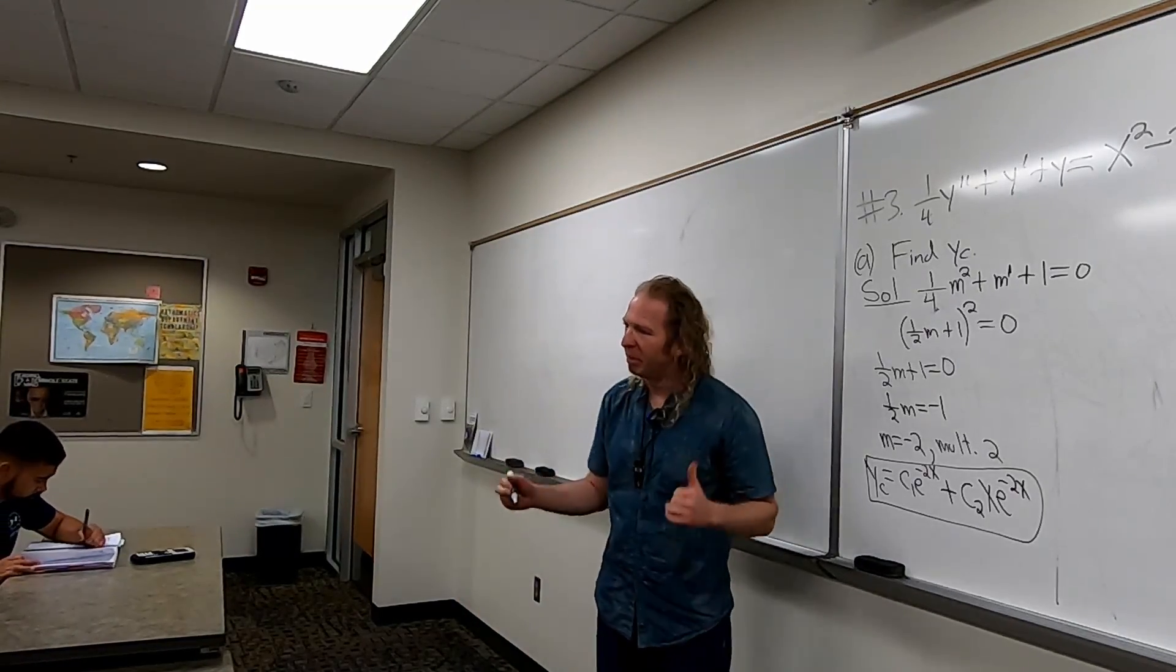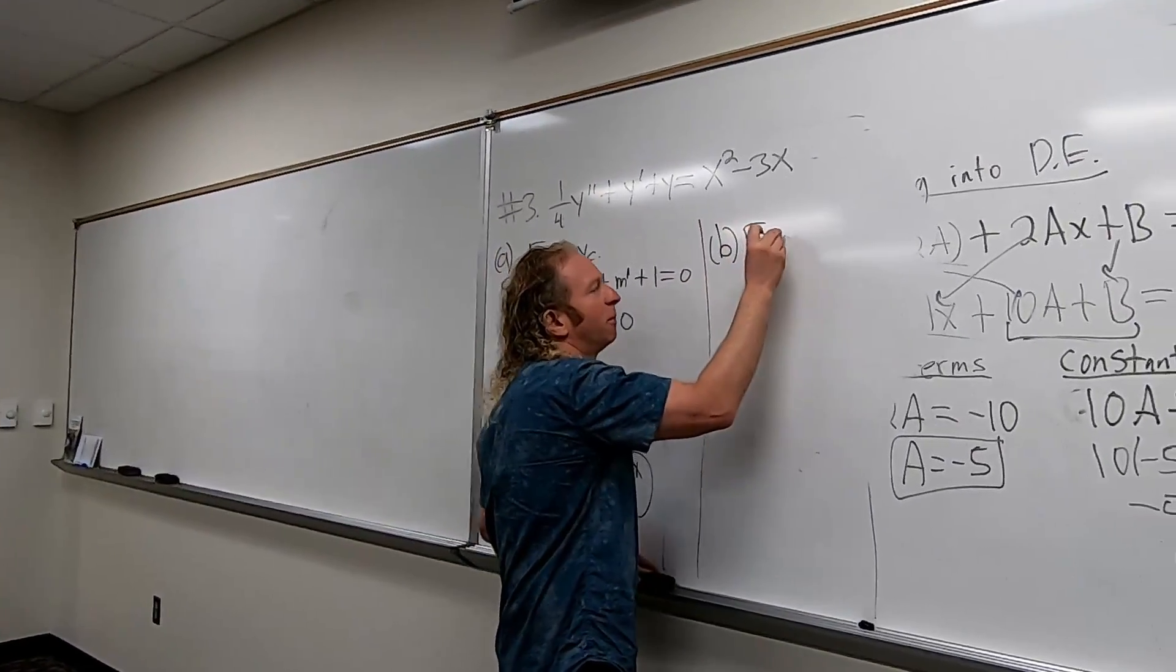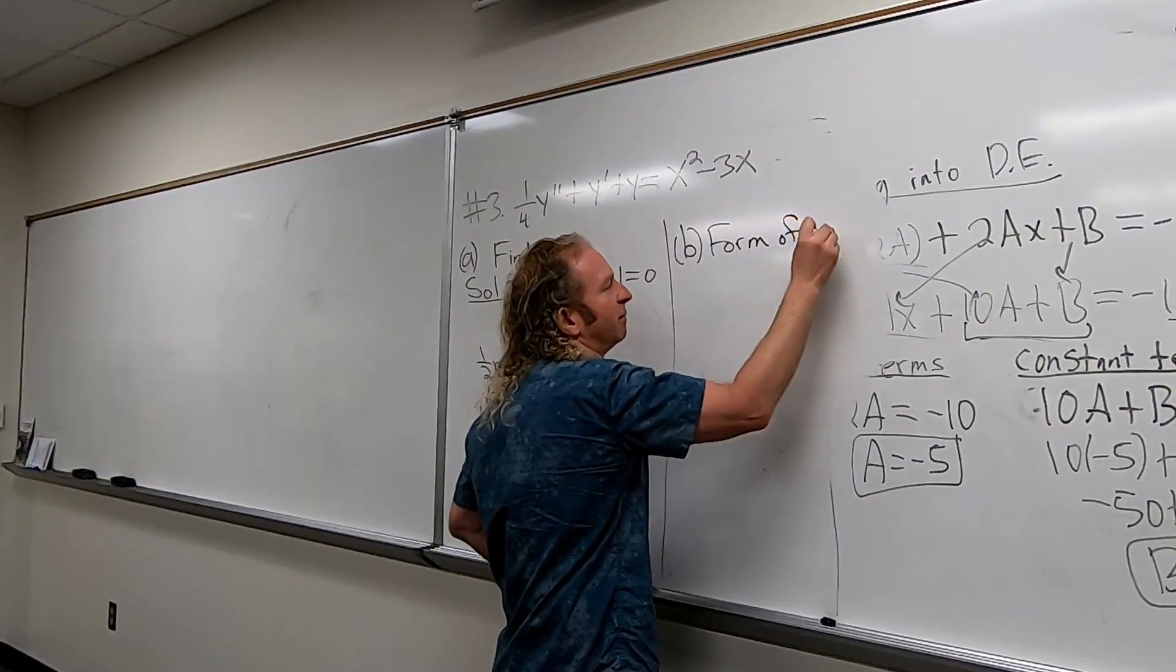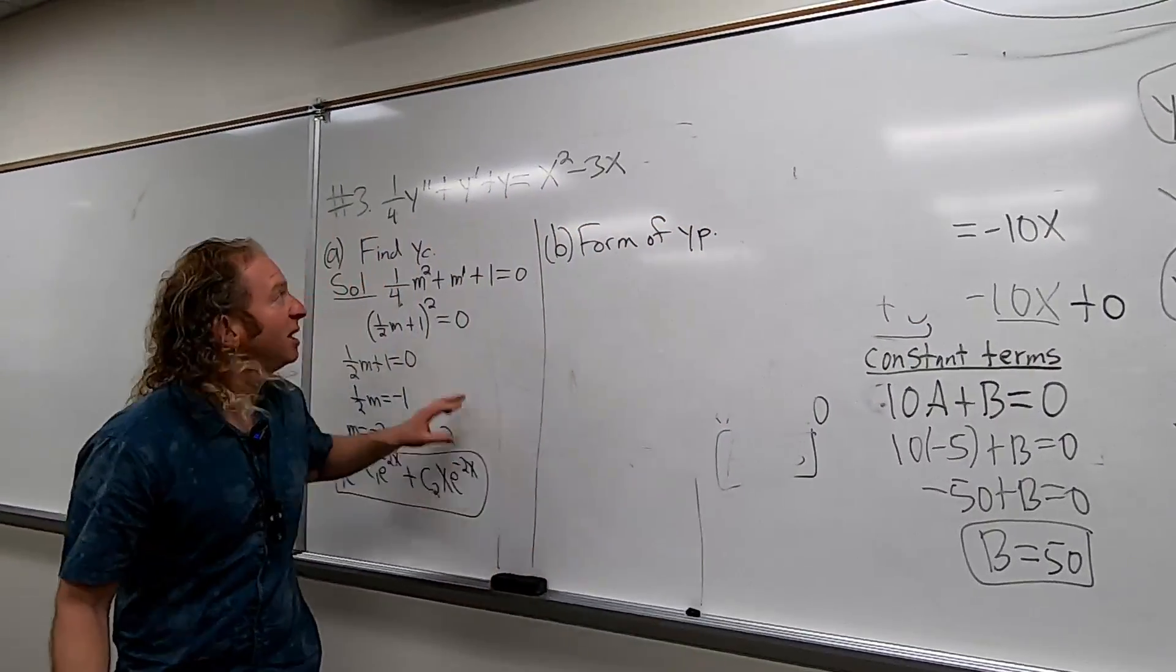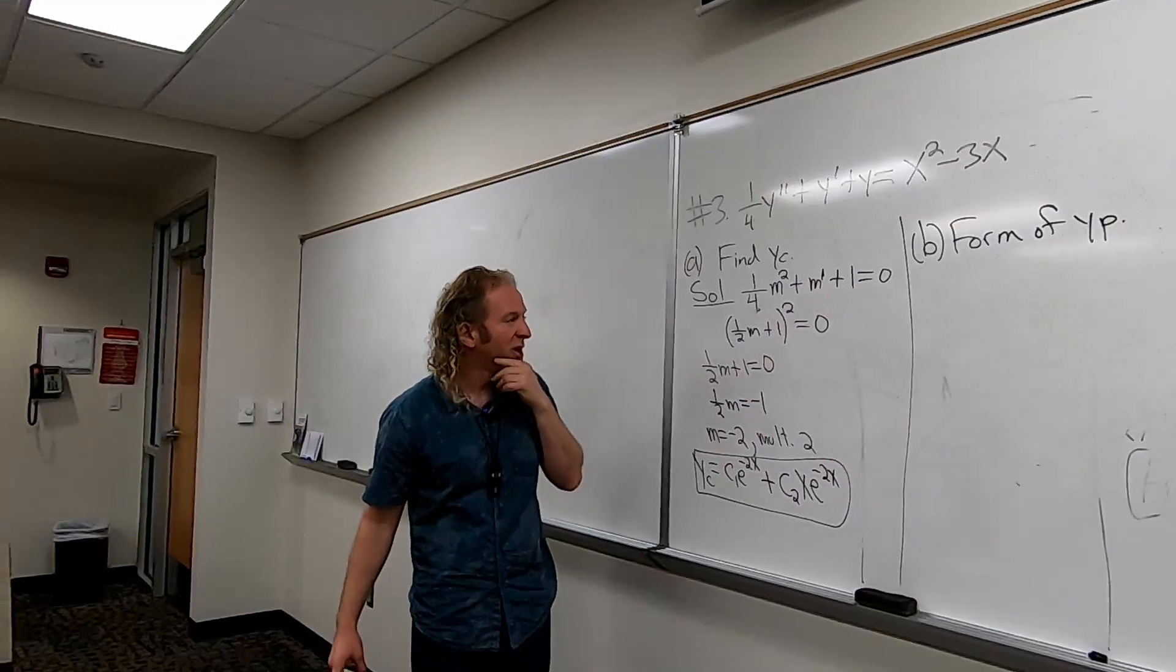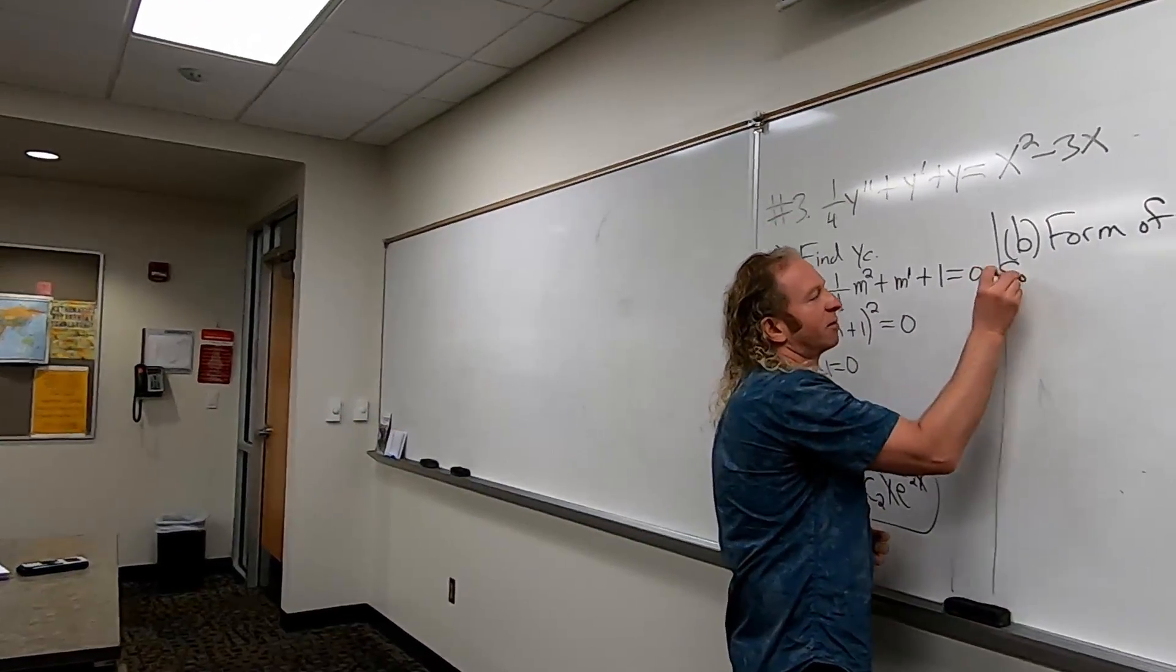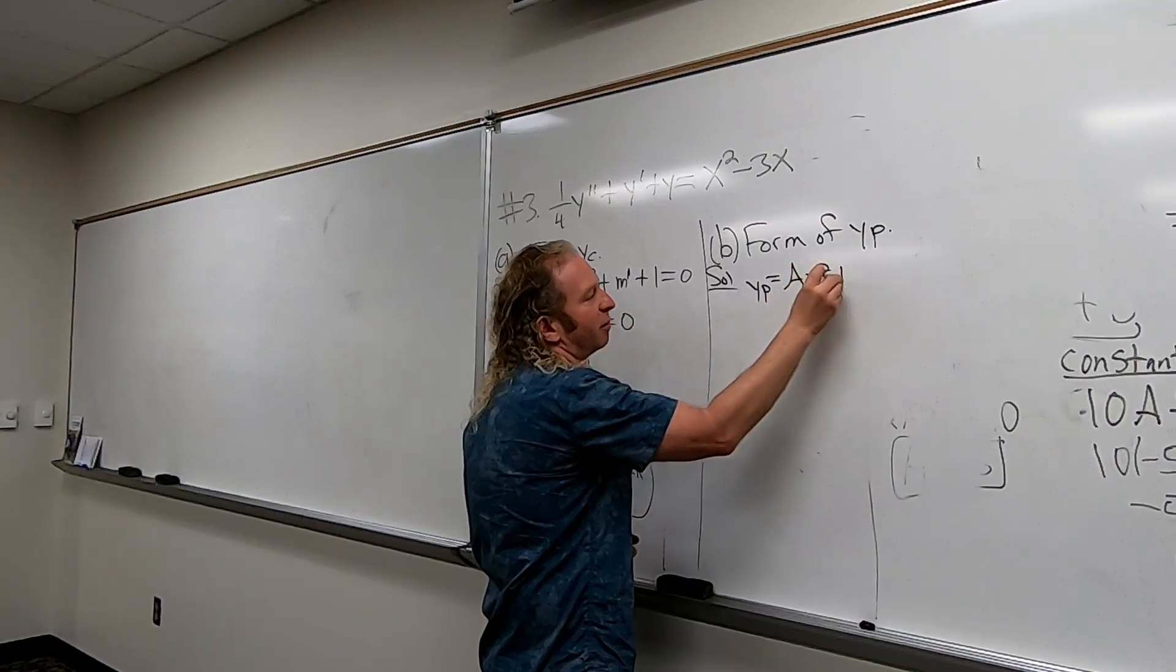All right, part B. Let's do it. Part B. Find the form of YP. So when we're looking for the form of YP, you want to mainly just look at this piece first, right? The right-hand side of your DE. So let's do that. So solution.